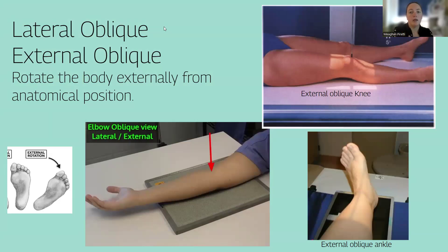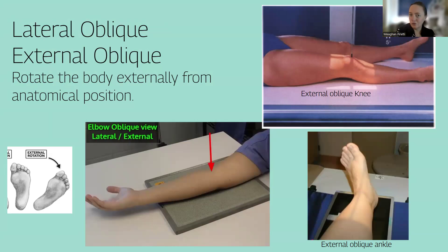Versus lateral or external obliques — you are rotating away from anatomical position. So the oblique elbow where you rotate out, external oblique knee, external oblique ankle — you're rotating away from your anatomical position. Lateral oblique is the same as external oblique.